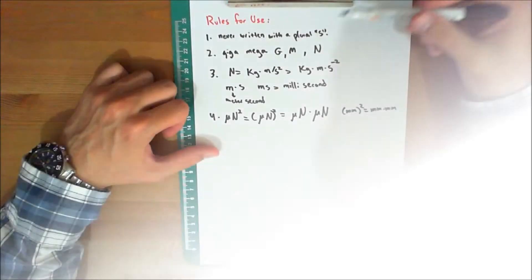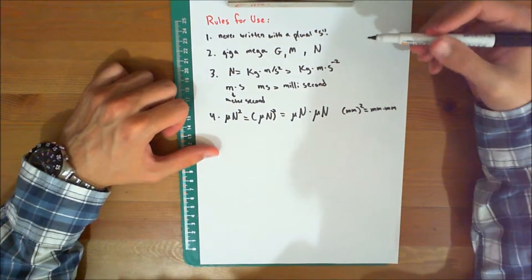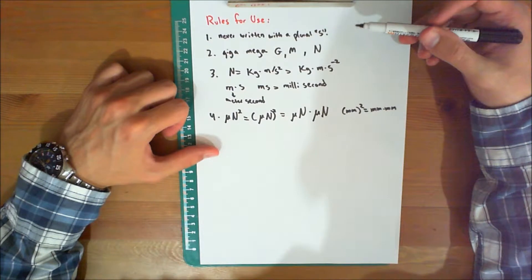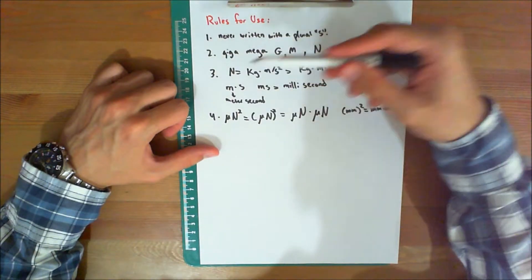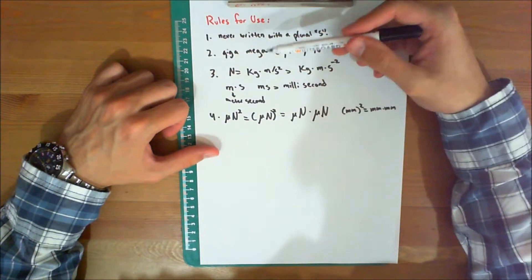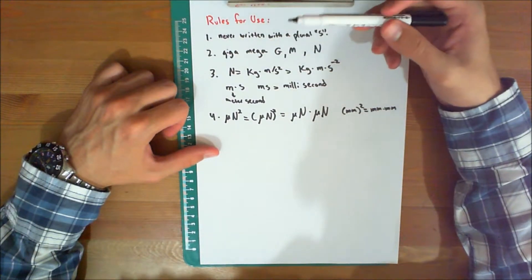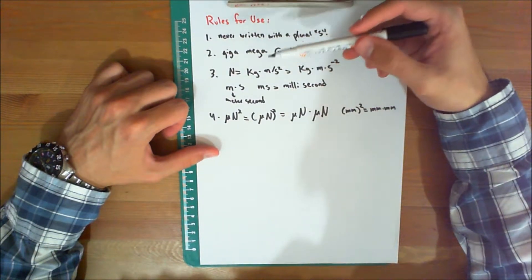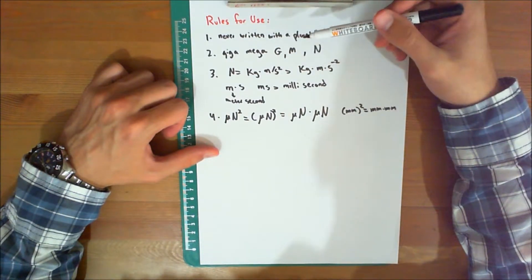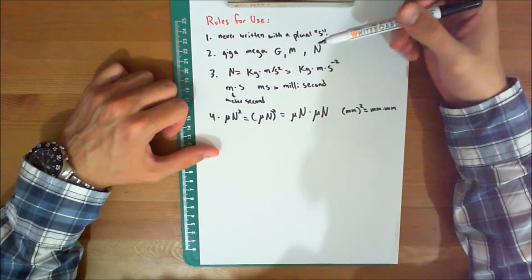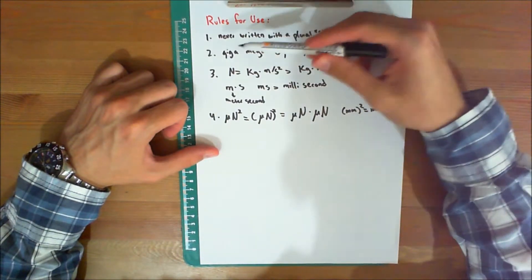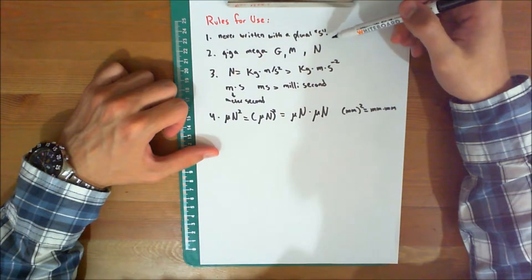Rules for use. The following rules are given for the proper use of the various SI symbols. Number one: a symbol is never written with a plural 's', since it may be confused with the unit for second.